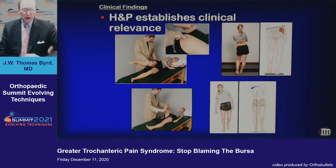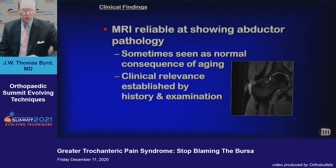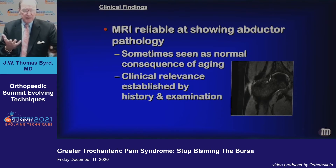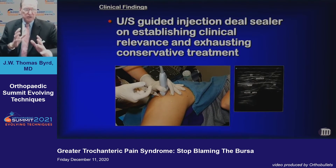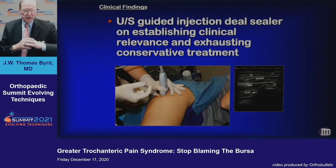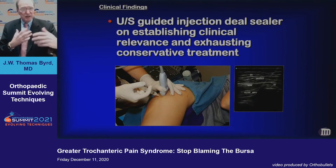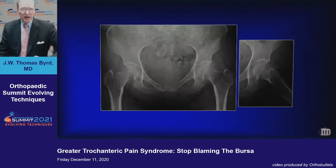The relevant clinical findings, really, come from your history and physical examination — that's how you establish relevance. Keeping in mind that MRIs are too good at showing problems in the abductor region, and your history and exam help establish the meaning of your imaging findings. Ultrasound and ultrasound-guided injections — you can see these lesions under ultrasound quite well and, under direct visualization, inject the lesion. If they get relief, that reinforces that the lesion is clinically relevant.